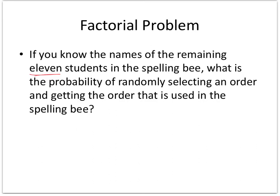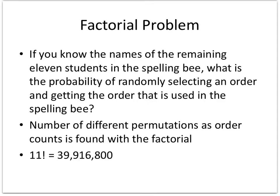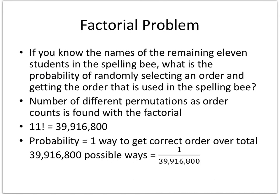If you know the names of the remaining 11 students in a spelling bee, what is the probability of randomly selecting an order and getting the correct one? Since order counts, this is a permutation problem. With 11 students, we calculate 11 factorial, which equals 39,916,800. The probability of guessing their exact order is one out of 39,916,800.